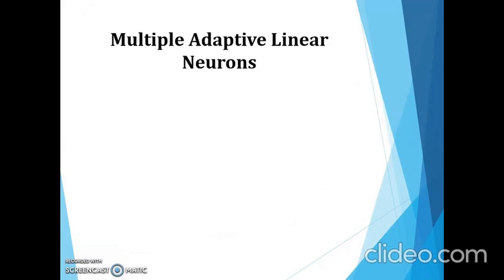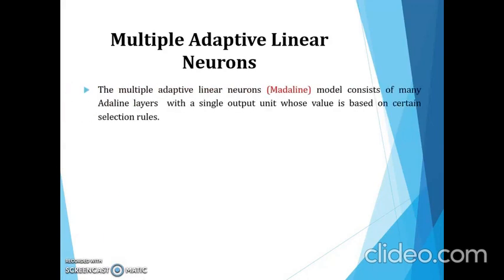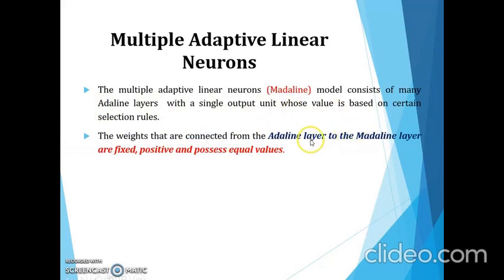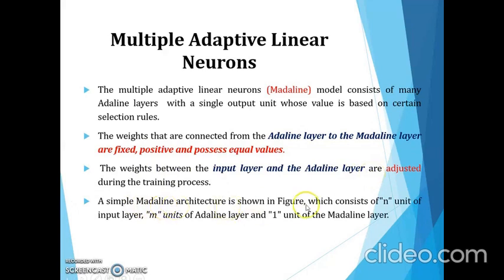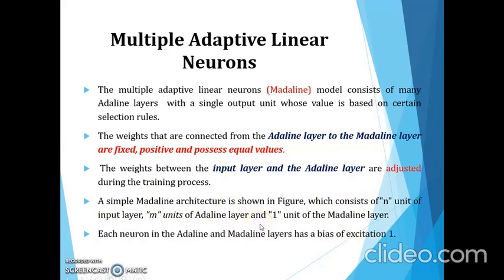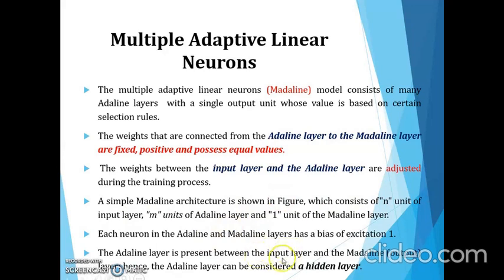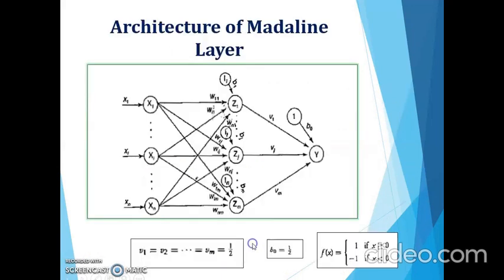Now we move to the next topic: MADALINE — Multiple Adaptive Linear Neuron. This is an extension of the ADALINE neural network. The model consists of multiple ADALINE layers with a single output unit whose value is based on a certain selection rule. There is an ADALINE layer (a hidden layer). From the ADALINE layer to the MADALINE layer, the weights are fixed, positive, and have equal values. Learning only happens between the input layer and the ADALINE layer, which are adjusted during training.